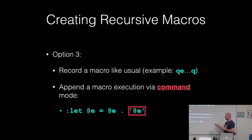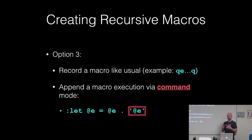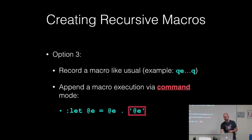Option three might be even better because you don't have to put any text in your file at all. You record the macro as usual and then use Vimscript via command mode to set the contents of the register to whatever the register currently contains plus this string @E at the very end. If you're familiar with Perl or PHP, this dot operator is basically just the string append operator — we're saying extend this string with a little bit more.